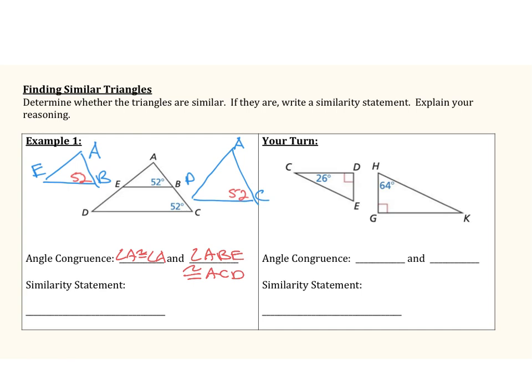I'm going to start by naming my smaller triangle: triangle ABE. That's going to be similar to my bigger triangle. When I name my angles, I want to go in the order of congruent angles. So I'm going to start with angle A, since A is congruent to A. Then I know that angle ACD is congruent to angle ABE, so I put C next, and then finally D.